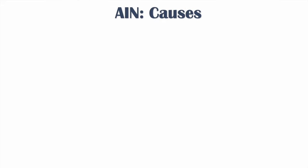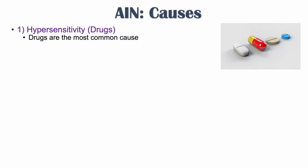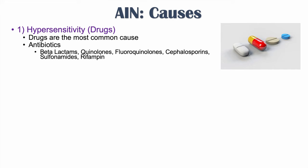Medications or drugs cause AIN through a hypersensitivity reaction. Drugs are the most common cause of AIN. Antibiotics that can cause AIN include beta-lactams, quinolones, fluoroquinolones, cephalosporins, sulfa drugs, sulfonamides, and rifampin.